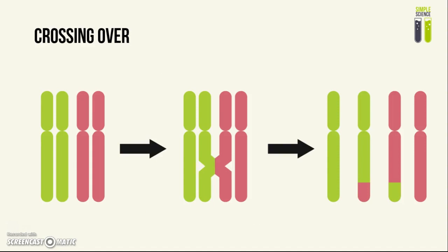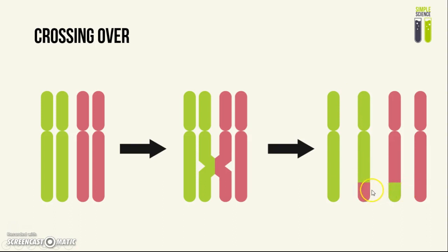Another way that meiosis can produce variation is by crossing over. After the chromosomes are duplicated in meiosis 1, the two homologous chromosomes will join together at a point called the chiasma — though you don't need to know that term. They join at this point and their genetic material is exchanged. You can see clearly in the diagram that the offspring will have a different genetic code from their parent, and all of the offspring will have different genetic codes from each other as well.